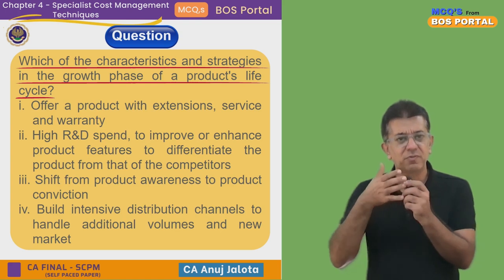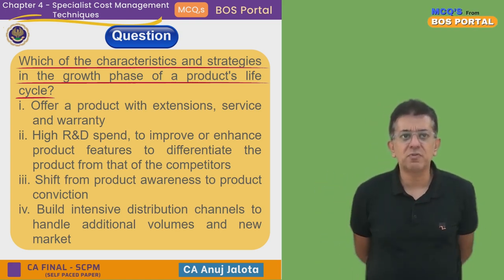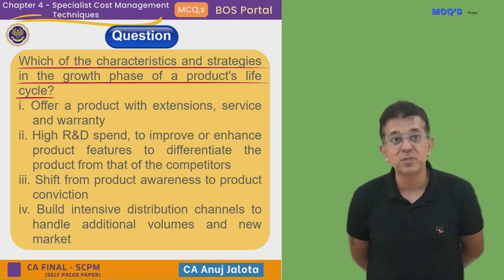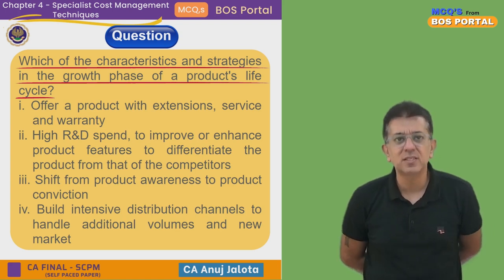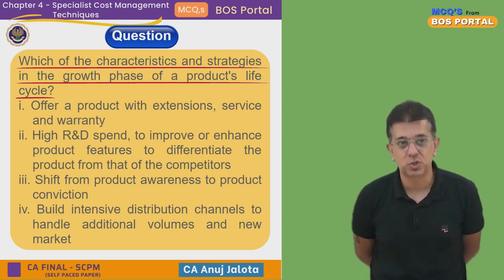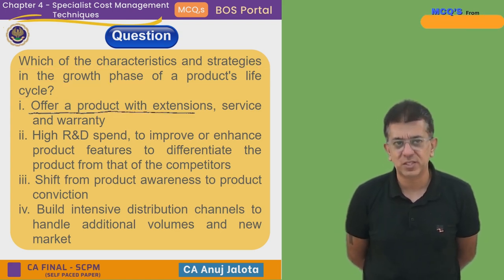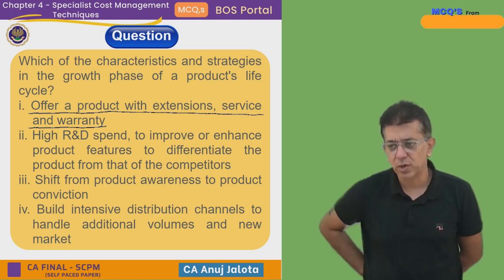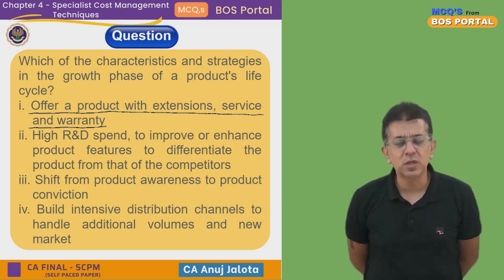Let's look at our four options to select which are the characteristics and strategies of the growth stage. First: offer a product with extension service and warranty. Yes, I think we can do that in the growth stage — our product is differentiated from competitors. In the growth stage, things have started going well.